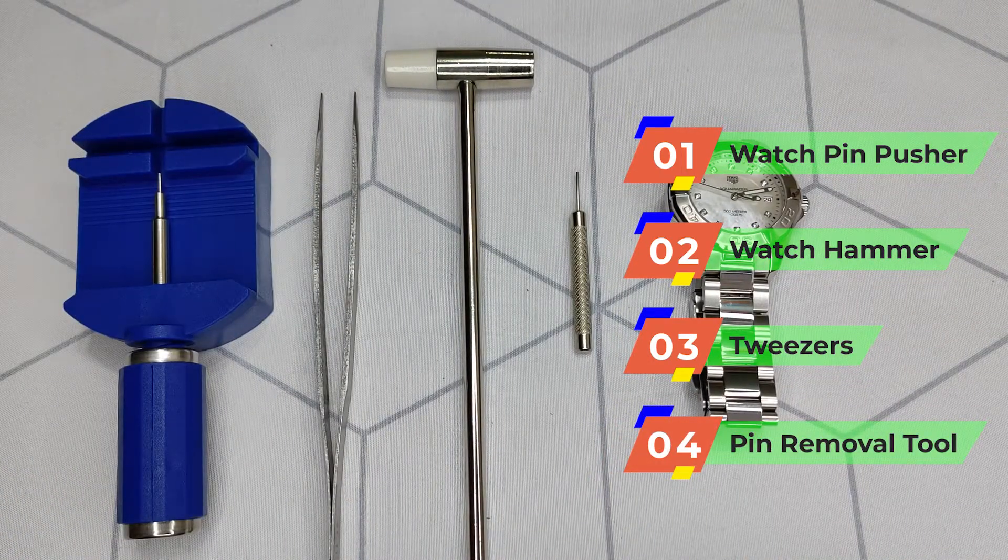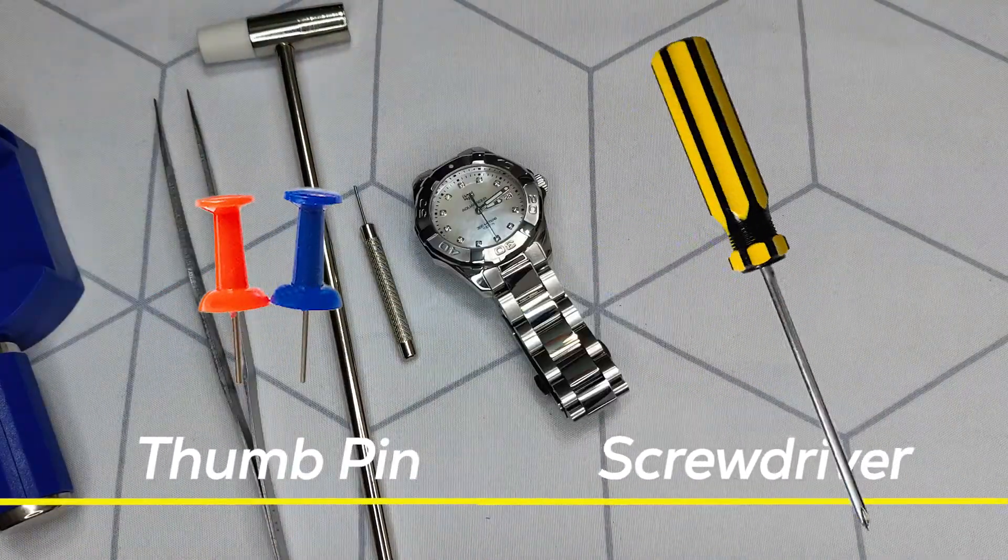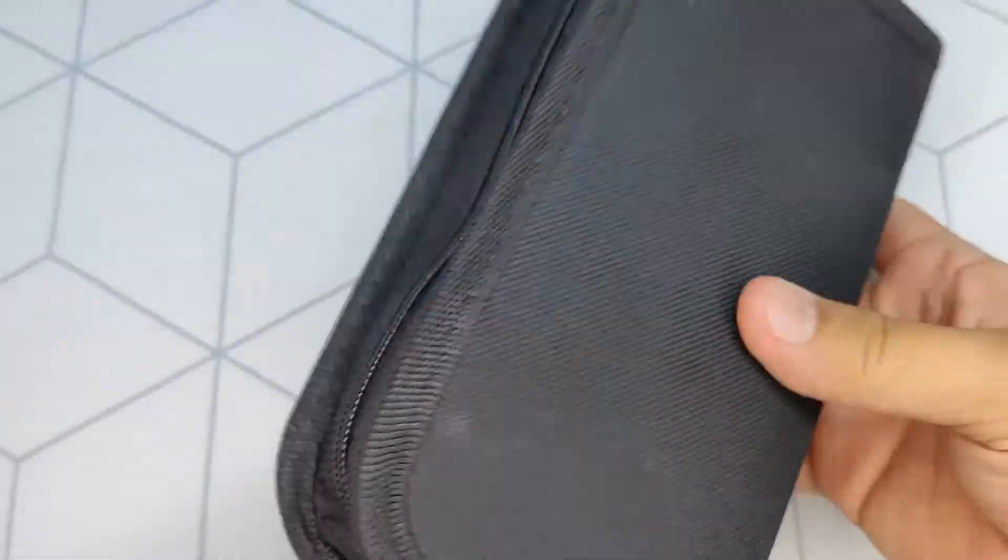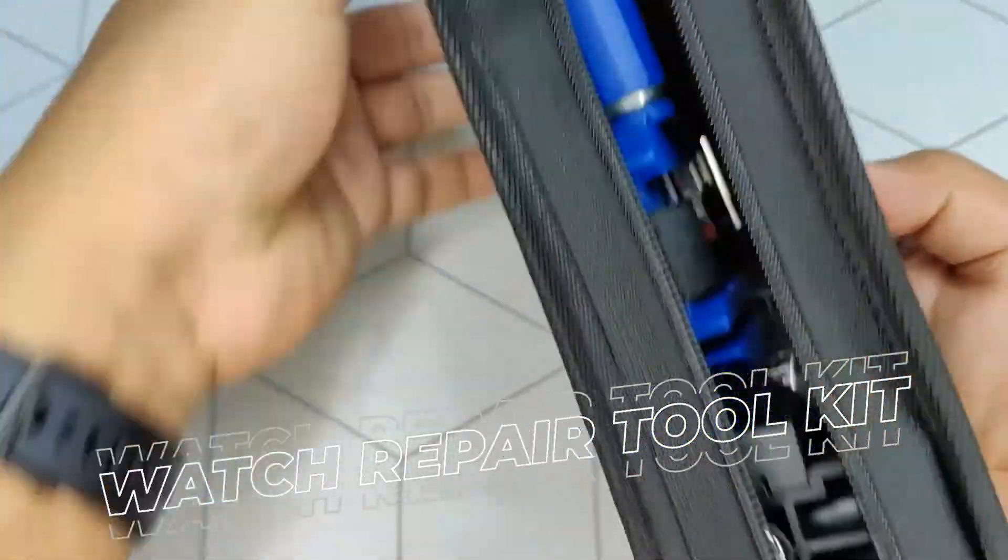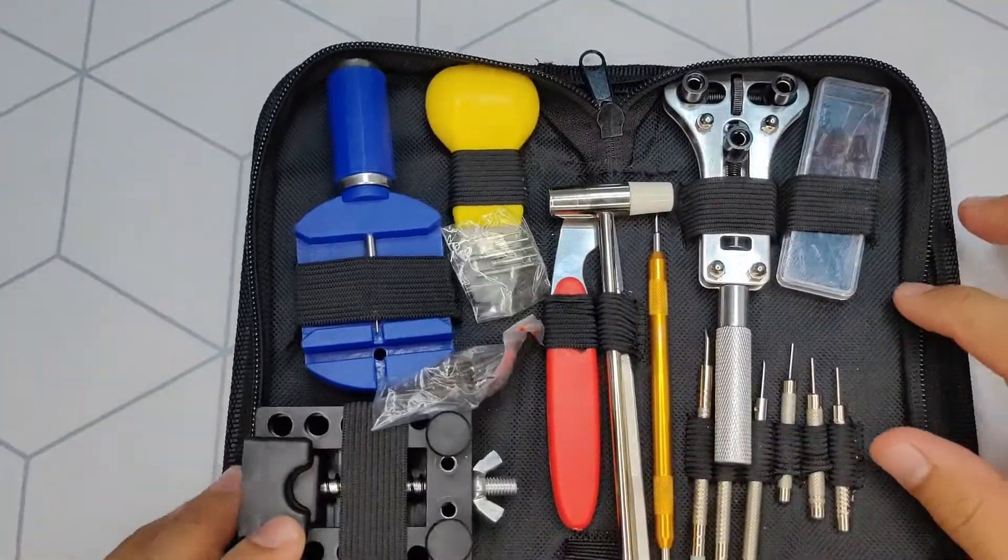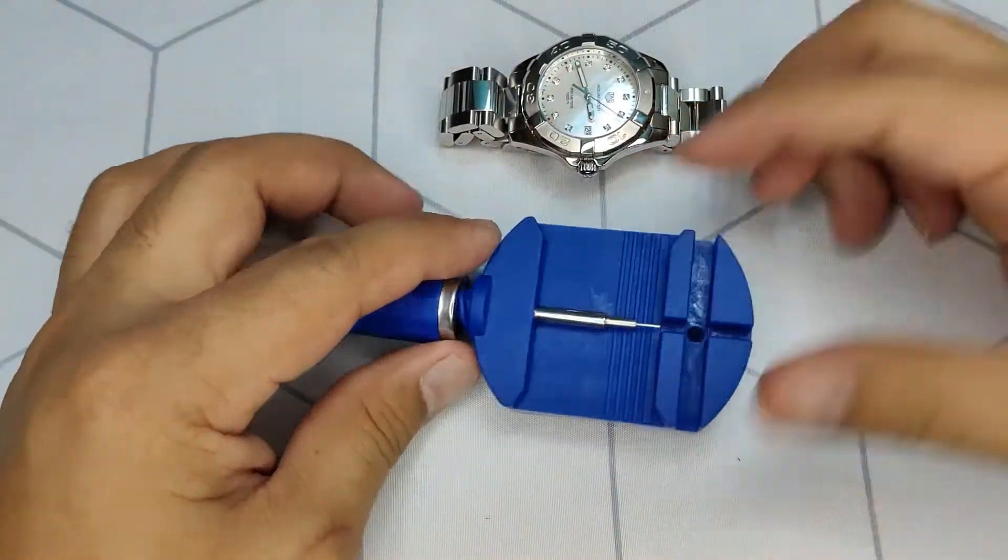But if you don't have these tools, then I recommend using a regular thumbtack and a screwdriver handle as a hammer. But of course, I strongly recommend purchasing a watch repair tool kit which can be bought for less than 10 US dollars online. This will be useful especially if you are planning to buy another watch in the future. It is always easier to do the job with the correct tools.